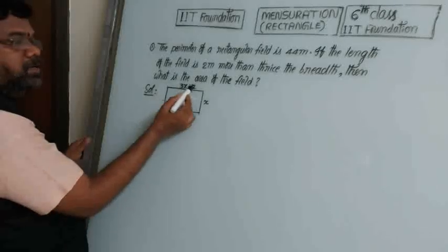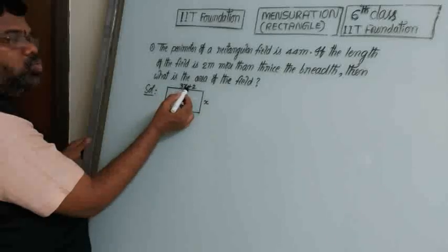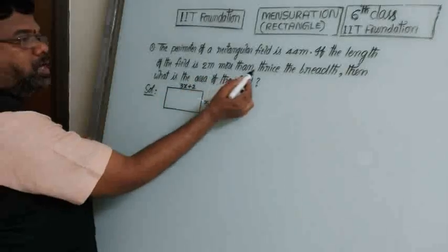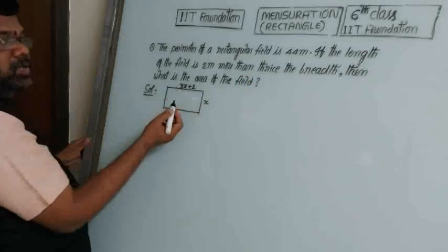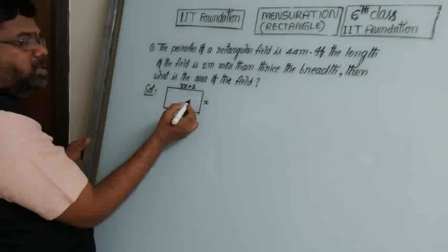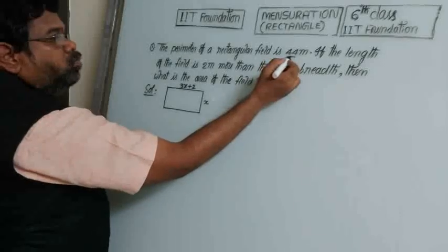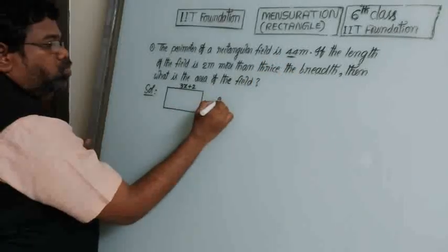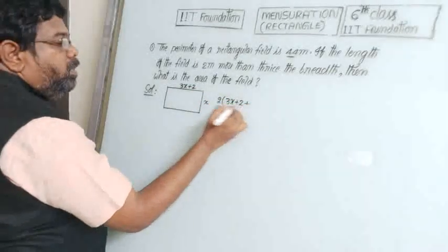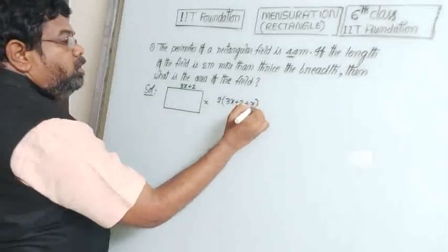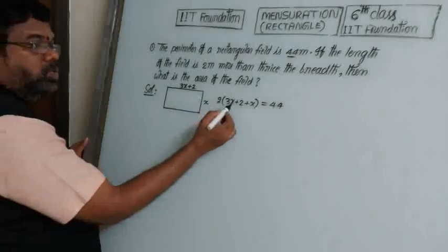So length is 3x plus 2 and breadth is x. Now perimeter is given. Perimeter means 2 into (L plus B). So 2 into (3x plus 2 plus x) equals 44 meters.